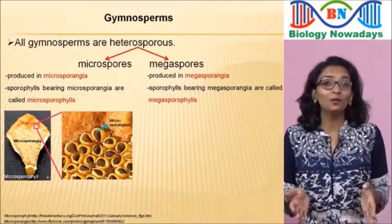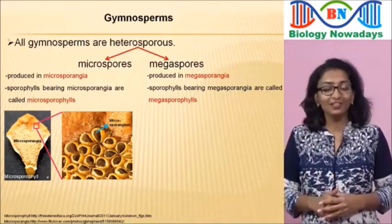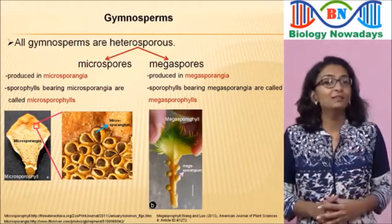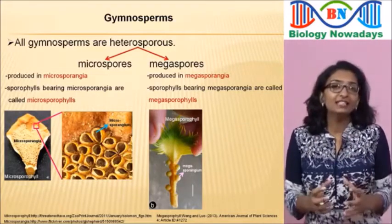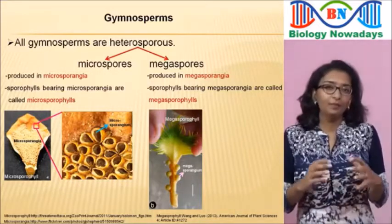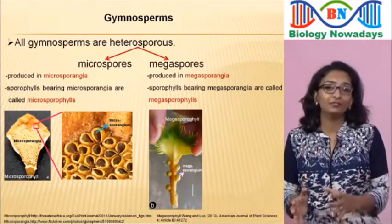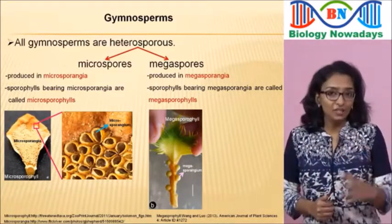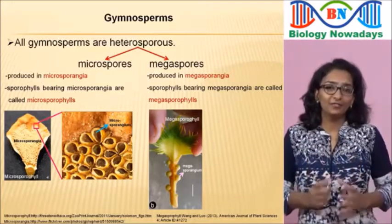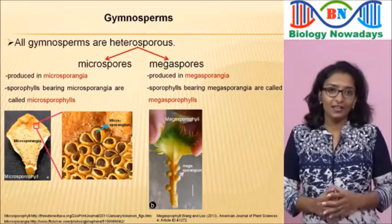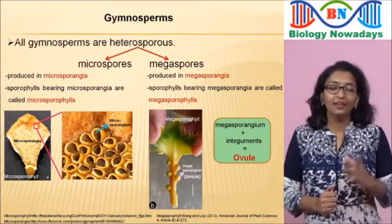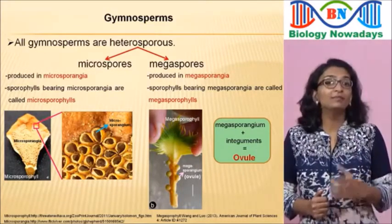These microsporangia are all open and they have released their contents already. Here is a megasporophyll of Cycas, and you can see the megasporangia. Inside the megasporangia, megaspores are produced. But the megasporangia in gymnosperms are different from those of Selaginella — in gymnosperms, the megasporangia are covered with protective layers called integuments. These megasporangia covered with integuments are called ovules, and these ovules will become seeds later.